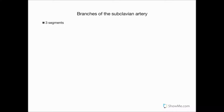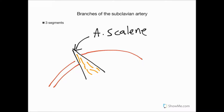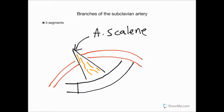Moving on first to the subclavian artery — it has three segments. We'll draw that on now. We need to draw a triangle-shaped muscle with some muscle fibers to indicate it's a muscle. That muscle is the anterior scalene. Then we get the subclavian vessel coming around, and we also need to draw on the first rib with its costal cartilage. The anterior scalene attaches to that first rib.